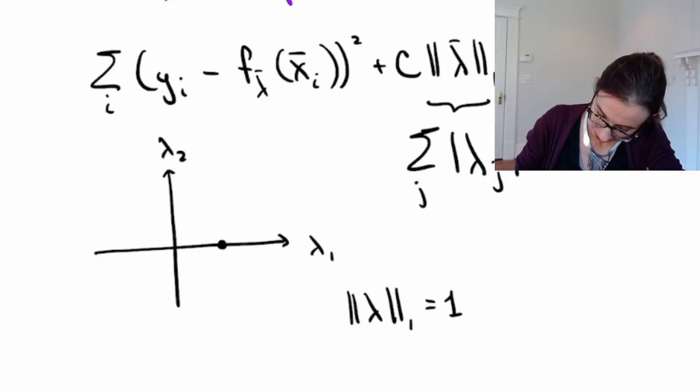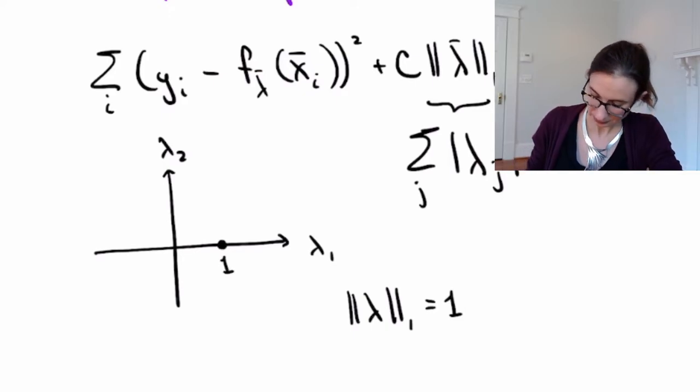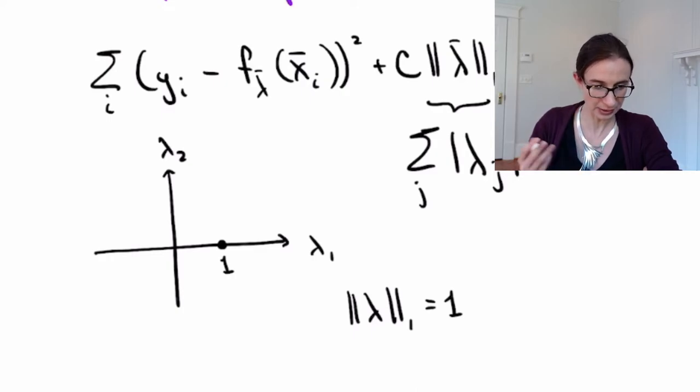Okay, so what are some points on this level set? Well, this point is the point 1 comma 0. The sum of the absolute values of the lambda is equal 1.